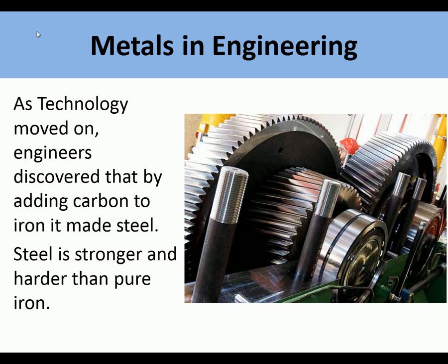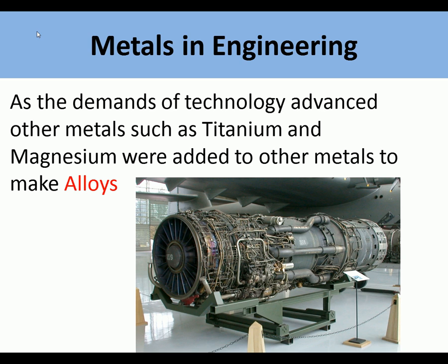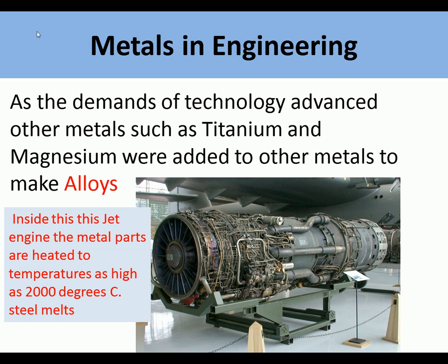As technology moved on, engineers discovered that by adding carbon to iron it made steel. Steel is stronger and harder than pure iron, and that enabled further engineering advances. As the demands of technology advanced, other metals such as titanium and magnesium were added to metals to make alloys.